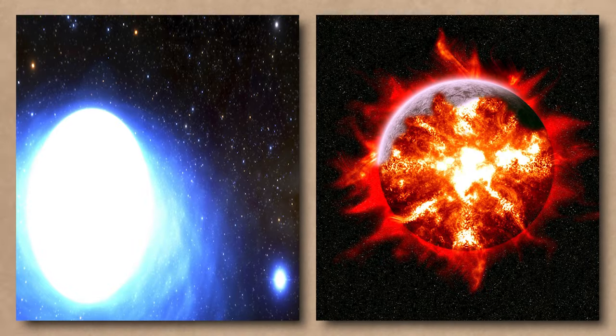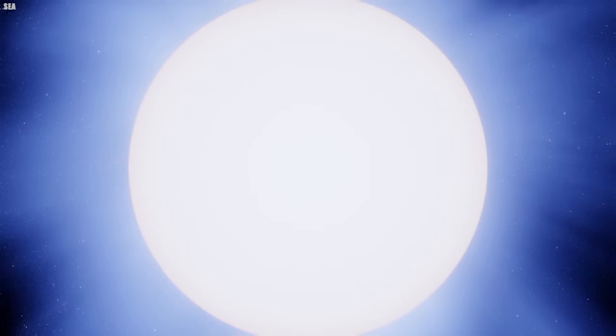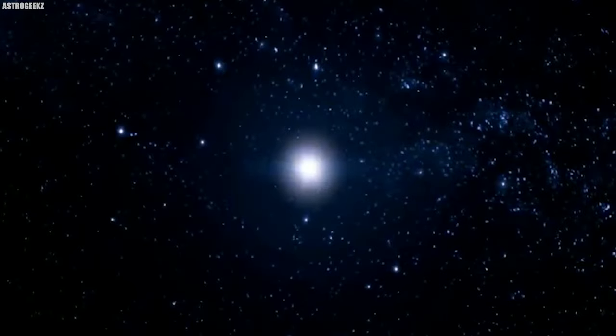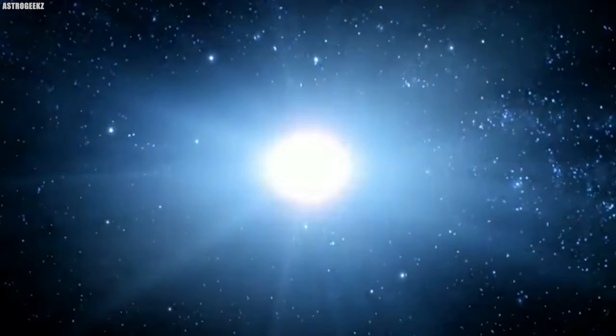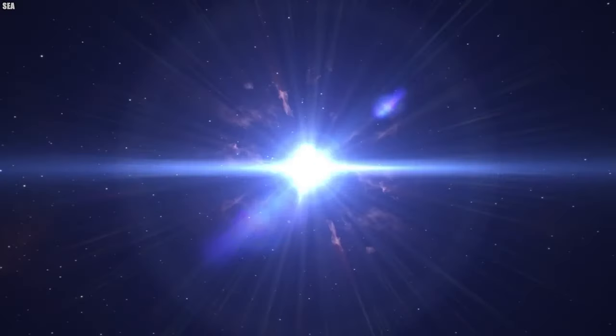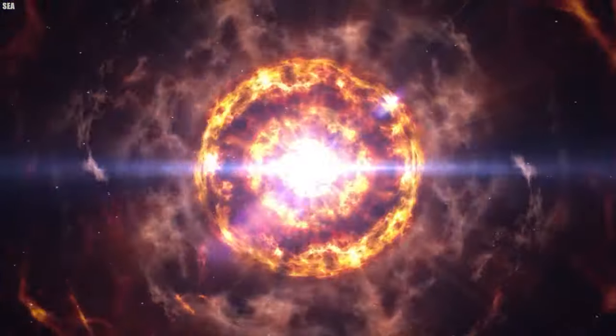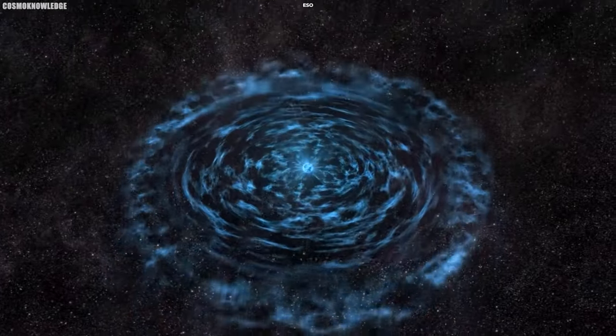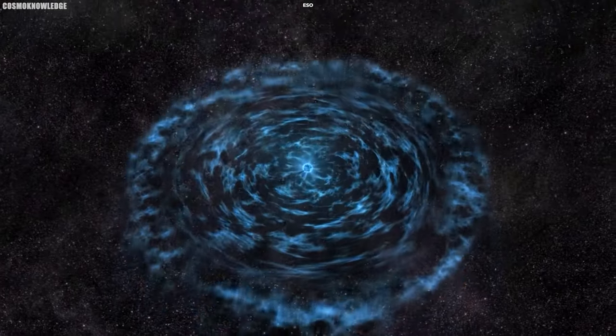Scientists think that most supernovae happen in two main ways. One is like a white dwarf reigniting nuclear fusion in a sudden burst, and the other is when the core of a huge star collapses due to gravity. Imagine the white dwarf scenario like this: the temperature of the dwarf shoots up, causing a runaway nuclear fusion, and the star completely breaks apart. This might happen because the dwarf is gathering material from a nearby star or merging with another star.